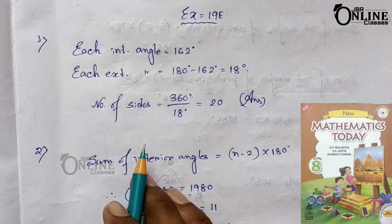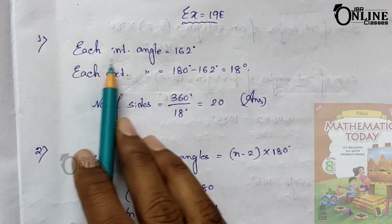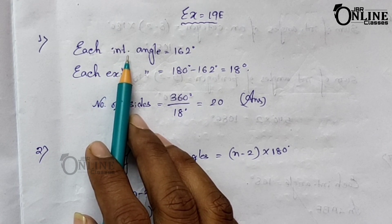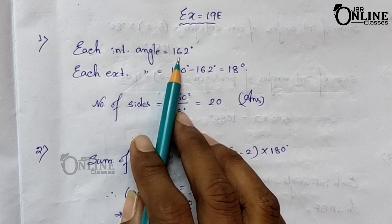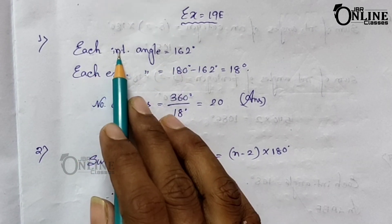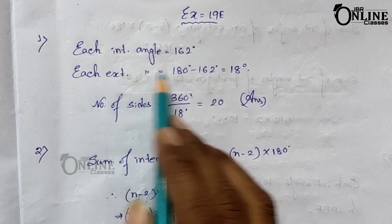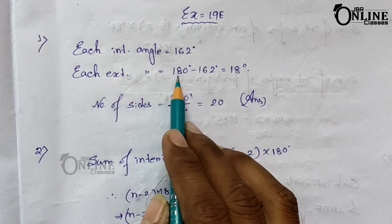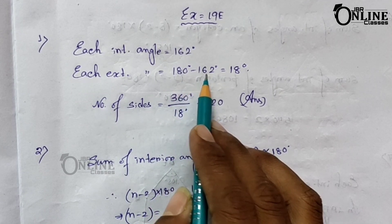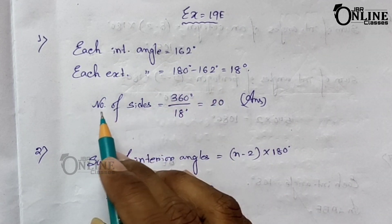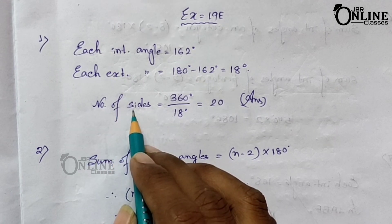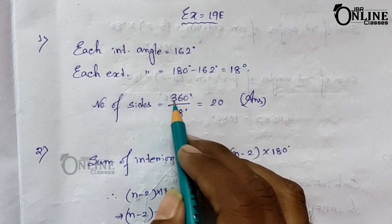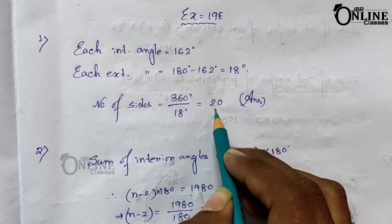Problem number one: find the number of sides of a regular polygon in which each interior angle is 162°. You know that the sum of the interior and exterior angle equals 180°. So if the interior angle equals 162°, then the exterior angle equals 180° − 162° = 18°. The formula to find the number of sides is 360° ÷ exterior angle = 360° ÷ 18° = 20.